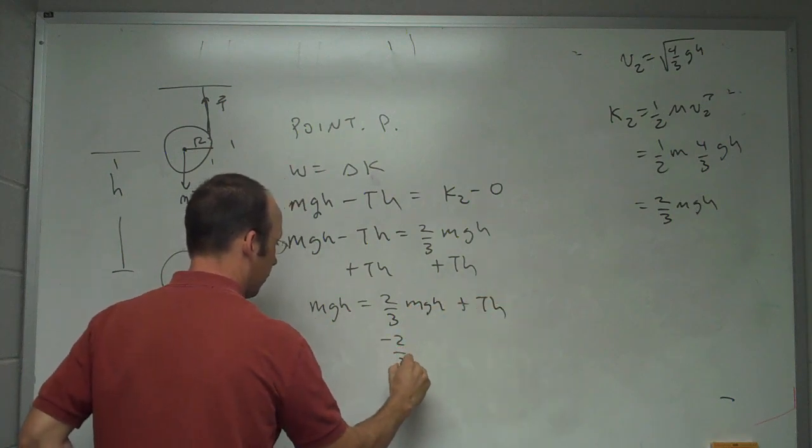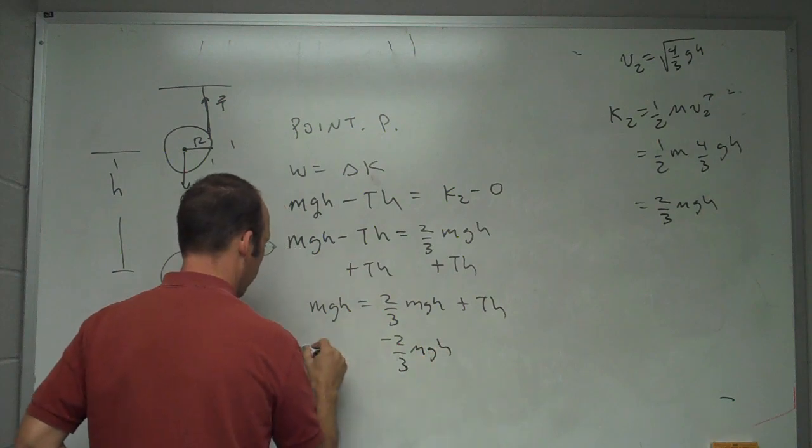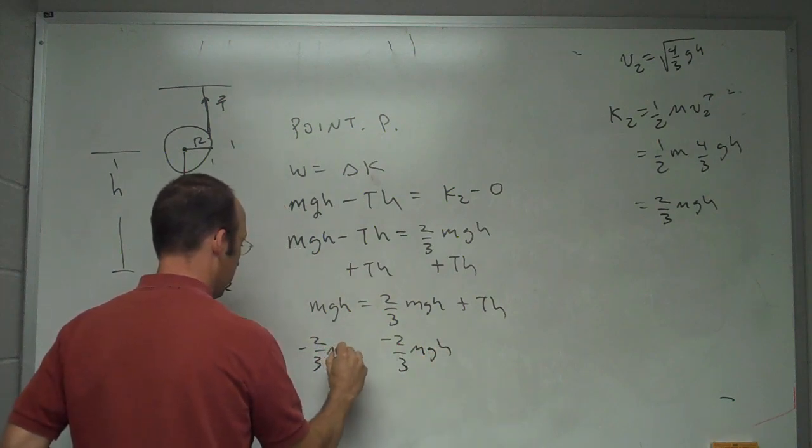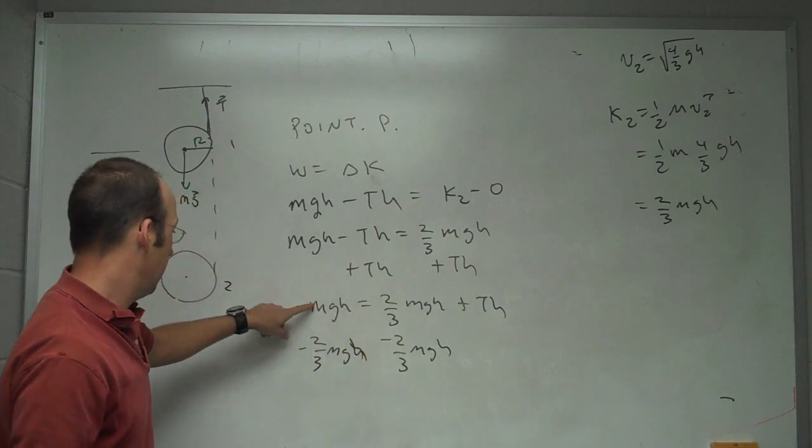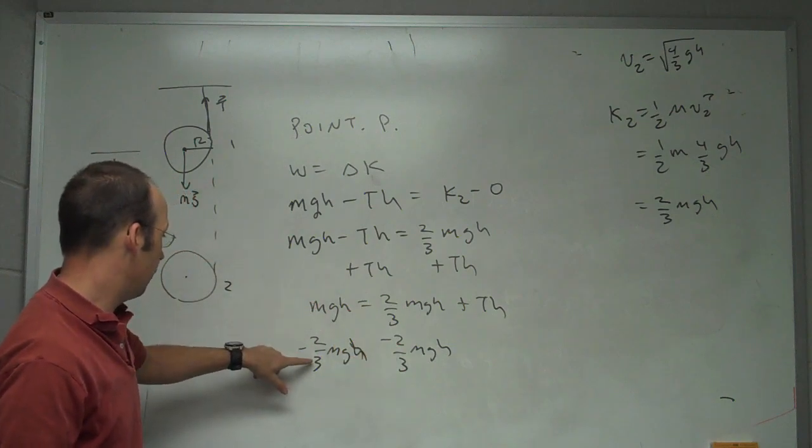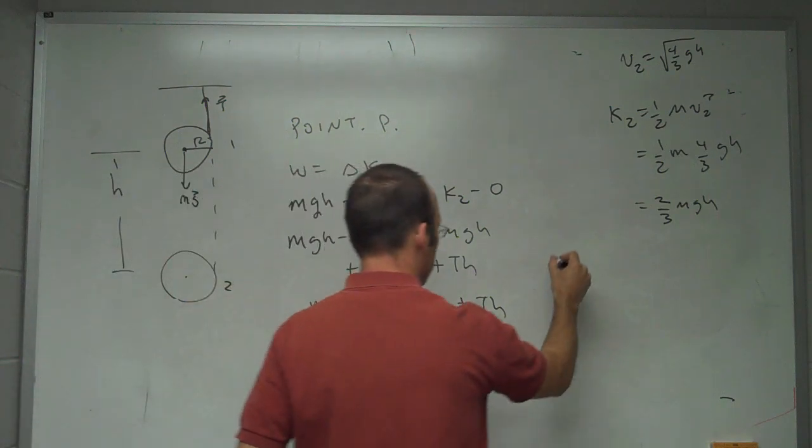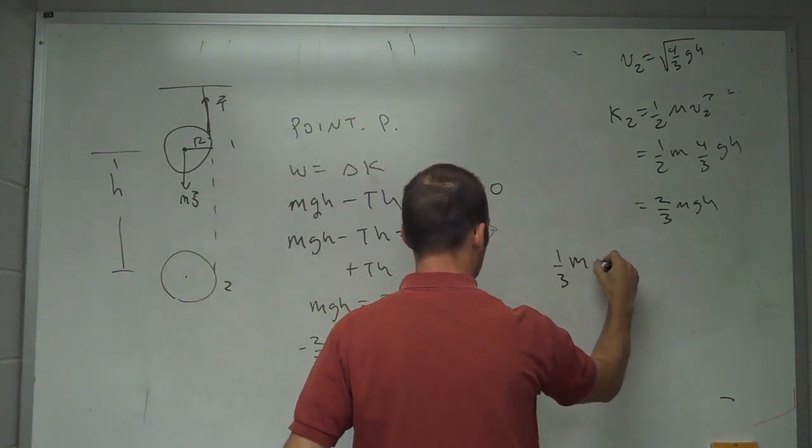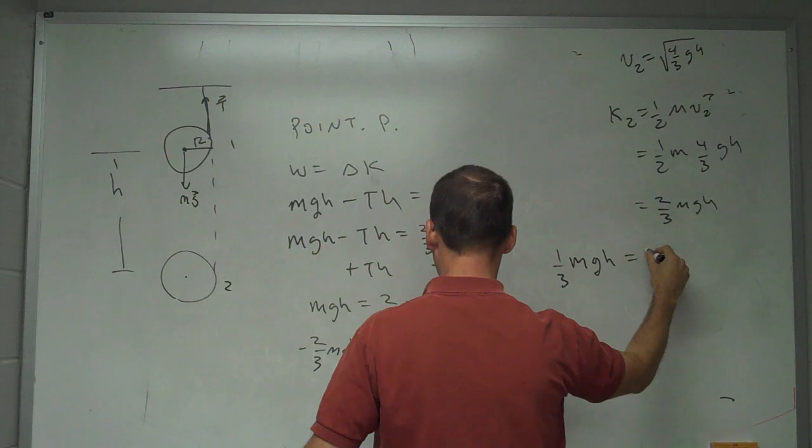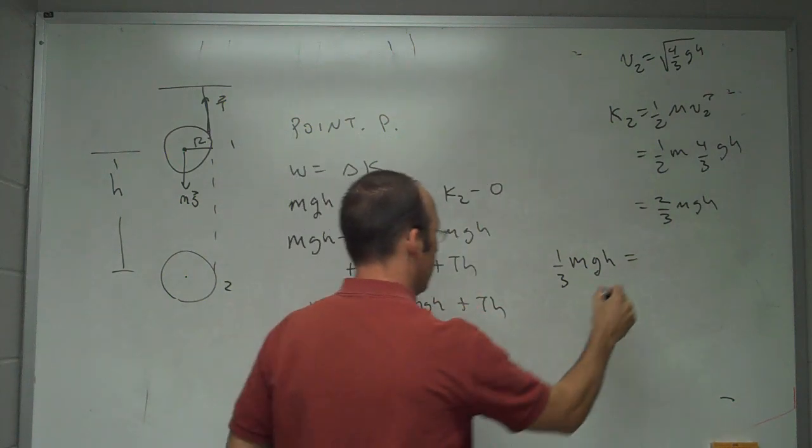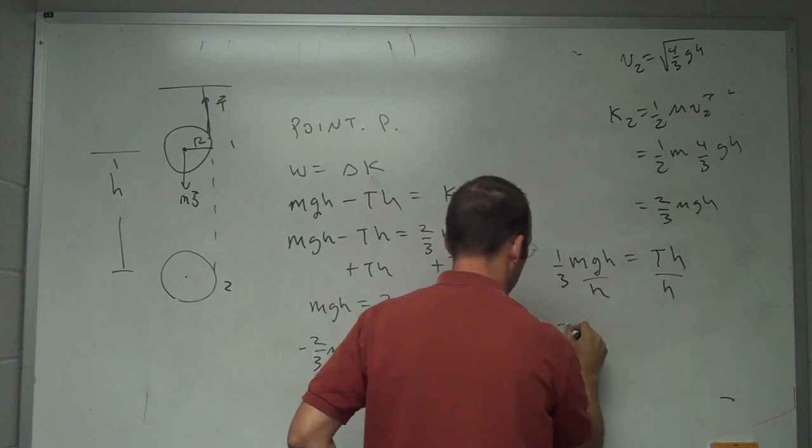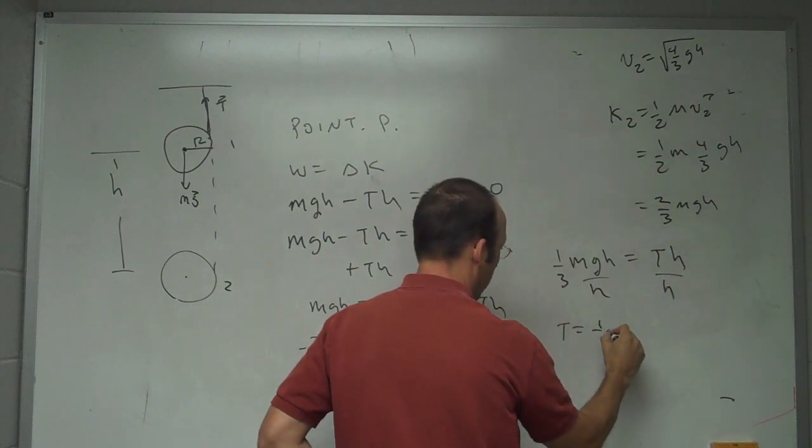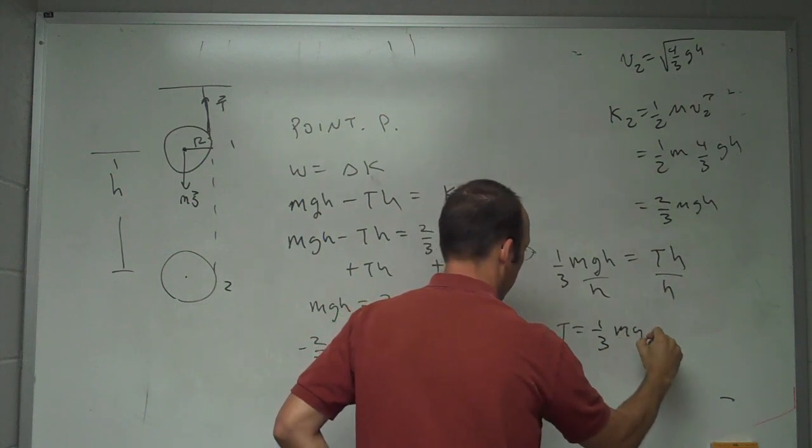Subtract two-thirds mgh from both sides. And I get mgh minus two-thirds mgh is one-third mgh. And that's going to be equal to Th divided both sides by h. T equals one-third mg.